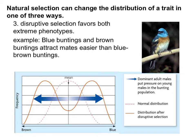The last type is called disruptive selection, and it favors both of the extreme phenotypes. We can also say it selects against the intermediate and selects for the extremes. An example are birds called buntings, which have three colors: blue, brown, and a mixture of blue and brown. Brown and blue buntings find mates easily, but the mixed blue-brown buntings don't attract mates easily, so their population numbers decrease while the populations of the extreme phenotypes increase. That is disruptive selection.